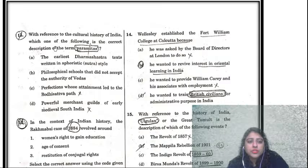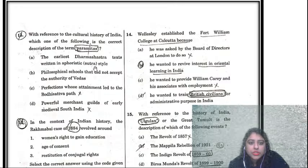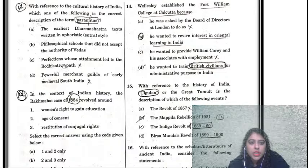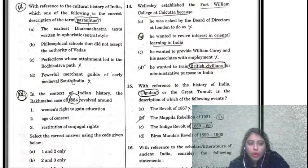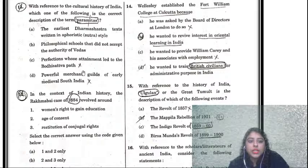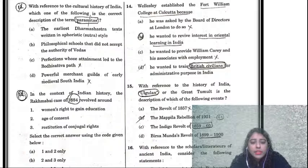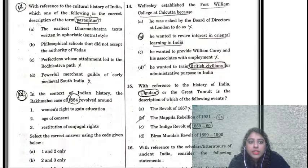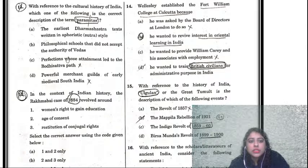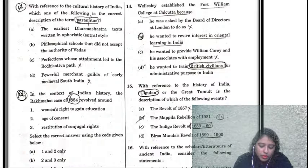Question eleven: with reference to the cultural history of India, which is the correct description of 'Paramitaz'? Options include: earlier dharmashastra texts written in the aphoristic sutra style, philosophical school that did not accept the authority of Vedas, perfections whose attainment led to the Bodhisattva path, and powerful merchant guilds of early medieval South India. This requires in-depth knowledge. The correct answer is C — perfections whose attainment led to the Bodhisattva path.